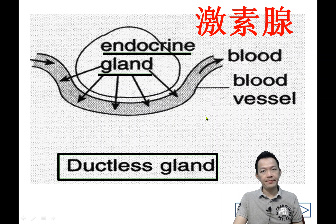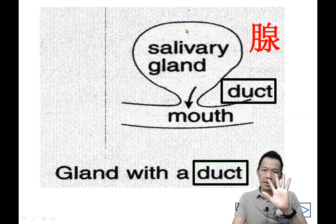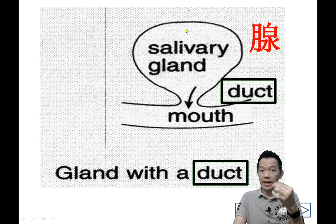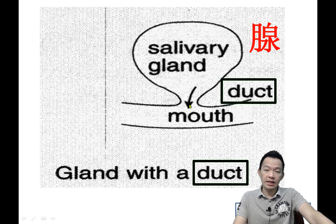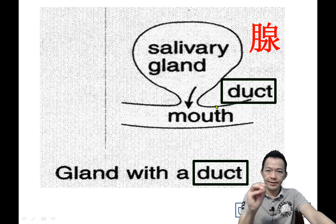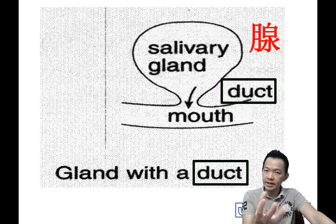In our body, we also have a lot of other glands, but they are not endocrine glands. For example, salivary glands — they produce saliva, and the saliva will be secreted into the mouth by using ducts. So the endocrine glands are ductless. They are ductless. They are making hormones, and the hormones will be secreted into the bloodstream without any ducts.